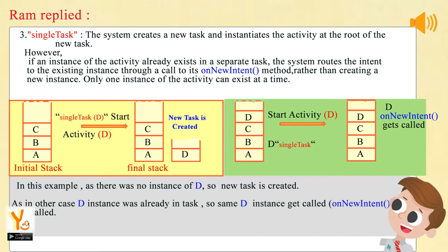3. Single Task — the system creates a new task and instantiates the activity at the root of the new task. However, if an instance of the activity already exists in a separate task, the system routes the intent to the existing instance through a call to its onNewIntent method, rather than creating a new instance. Only one instance of the activity can exist at a time. In the above example, as there was no instance of D, a new task is created. In the other case, where a D instance already existed in a task, the same D instance gets called and onNewIntent is called.